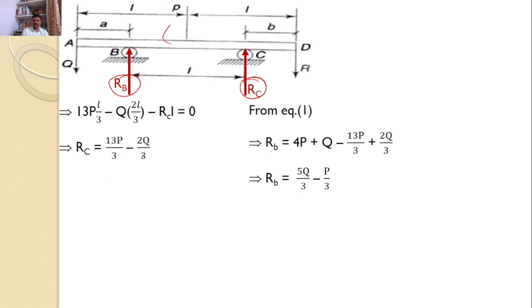So RC value must equal 0 and RB value must equal 0. The bar will remain in equilibrium only if RC and RB equal 0.